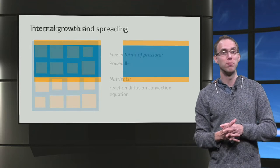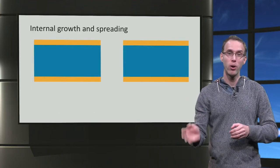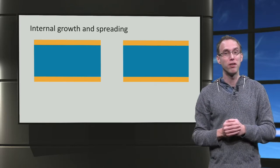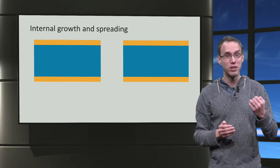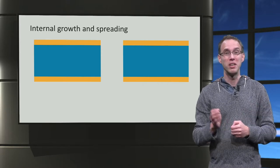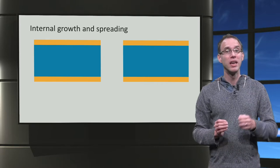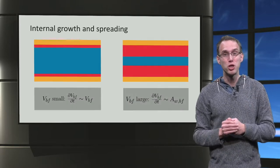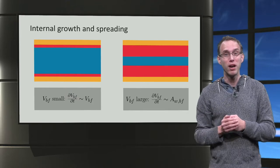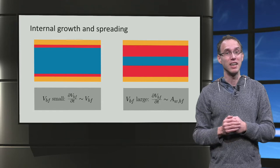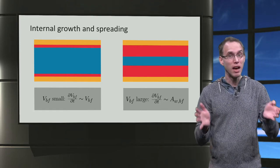Let us focus on the biofilm growth process, internal growth and spreading. We assume biofilm forms a constant density, uniform layer on the cylindrical tubes. So instead of biomass, we can look at biofilm volume. If the biofilm volume is small, we assume that the biofilm growth is proportional to VBF. In this case, the nutrients and bacteria can meet everywhere.